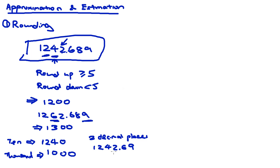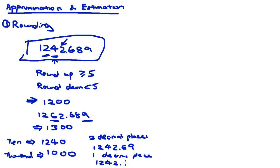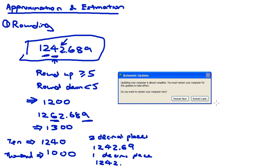If the question asks for one decimal place, you look at the second decimal place. If it's more than 5, you round up; if it's less than 5, you round down. In this case the second decimal digit is 8, which is more than 5, so the answer rounded to one decimal place is 1242.7.